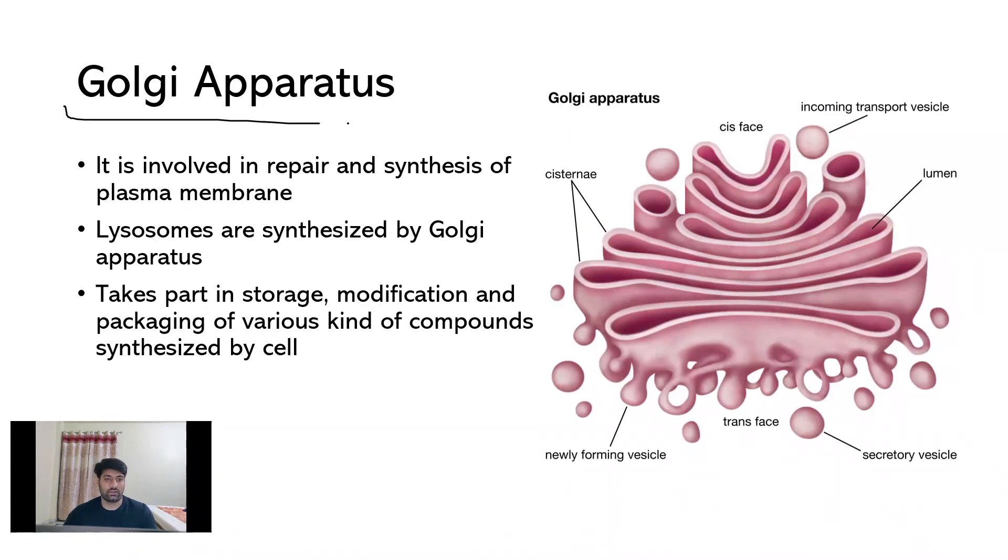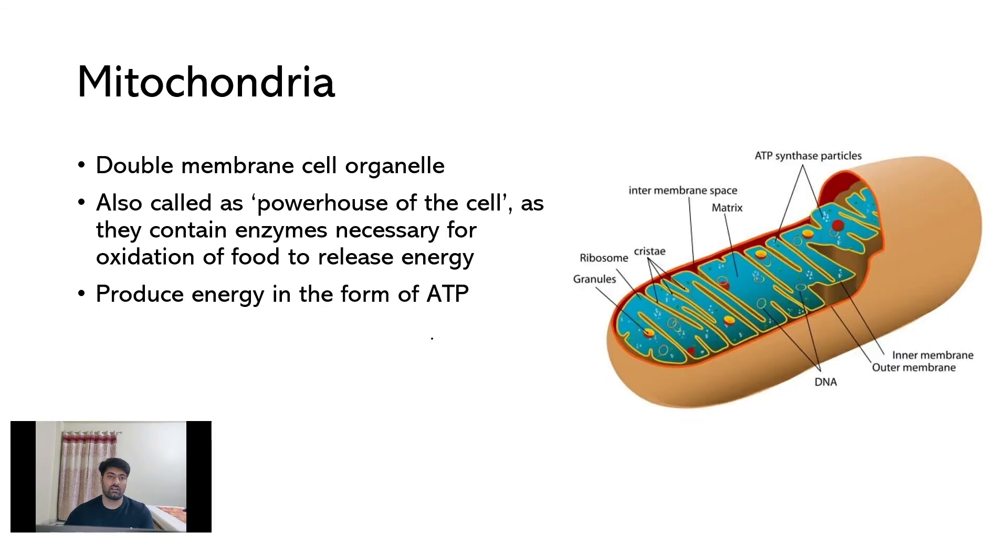After that, we can see Golgi apparatus. Golgi apparatus has parallel sac-like structures, which are called as cisternae. As we can see here, it has two faces, cis-face and a trans-face. Golgi apparatus is involved in repair and synthesis of plasma membrane. Lysosomes are also synthesized by Golgi apparatus. They take part in storage modification and packaging of various kinds of compounds that are synthesized by cells.